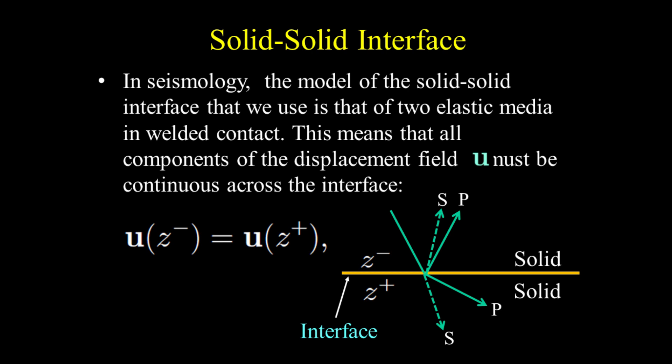In seismology, the model of the solid-solid interface we use is that of two elastic media in welded contact. This means that all components of the displacement field U must be continuous across the interface. In other words, the displacement above the interface is equal to the displacement just below the interface.